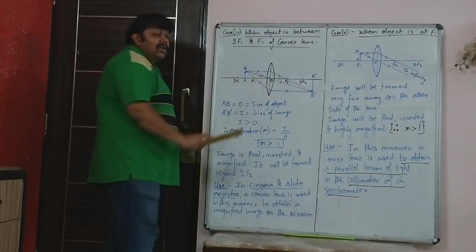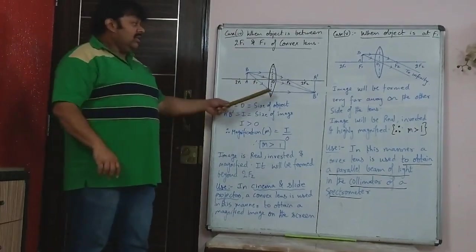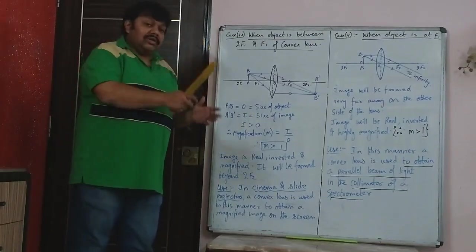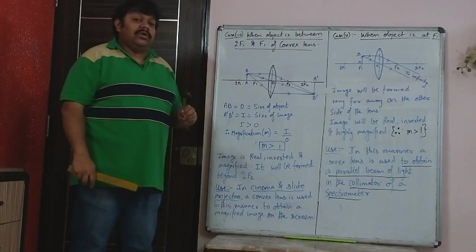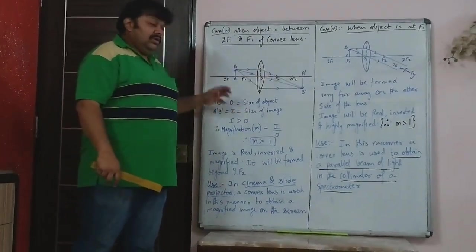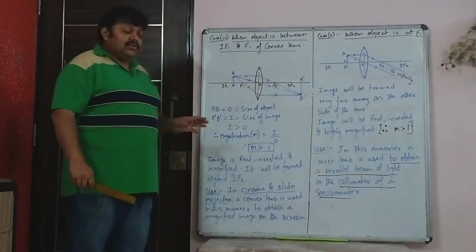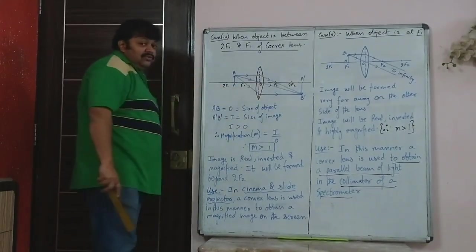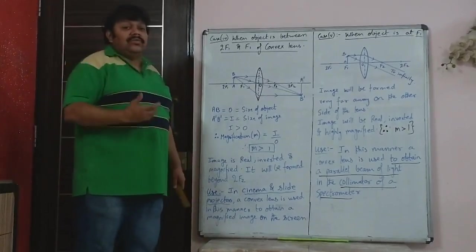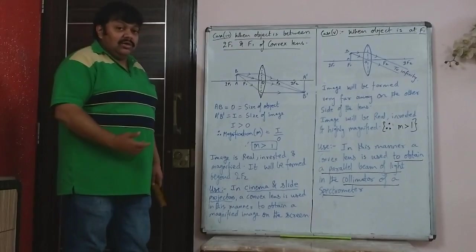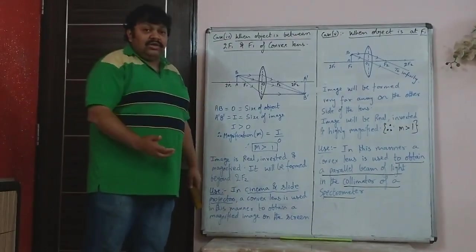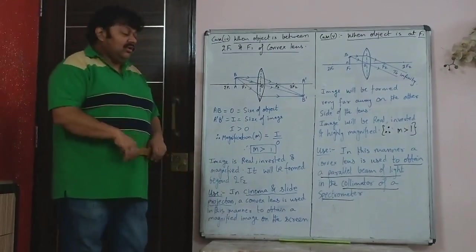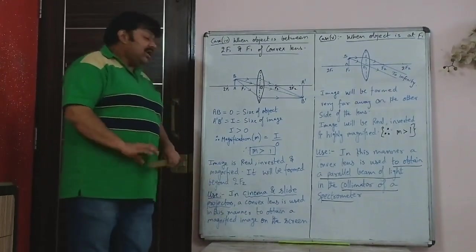We have shown all three rays here. If the exam paper does not specify, you can draw any two rays. This position — object between 2F1 and F1 — is used to get a magnified image of the object. It is used in projectors: slide projectors and cinema projectors. You place the transparency inverted so that the image on screen comes erect and magnified.